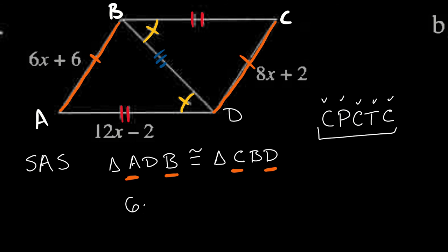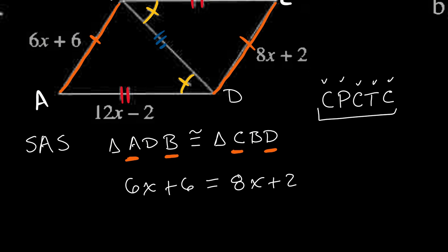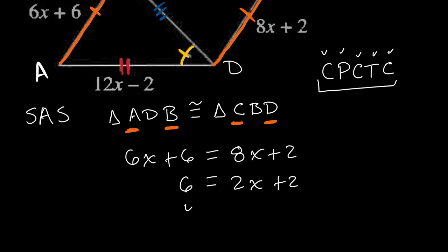I can solve this by subtracting 6x from both sides: 6 = 2x + 2. Subtracting 2 from both sides: 4 = 2x. Therefore x = 2.